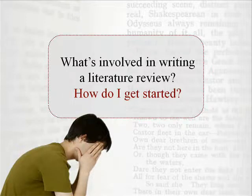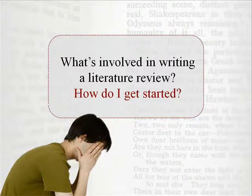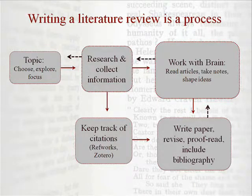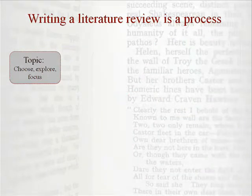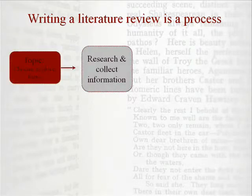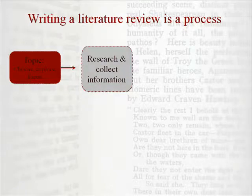At this point, you may be asking yourself: what's involved in writing a literature review, and how do I get started? Writing a literature review is a process with several key steps. Your first step involves choosing, exploring, and focusing your topic. At this stage, you might discover that you need to tweak your topic or the scope of your research as you learn more about the literature. Then you'll need to do some research using article databases, the library catalog, Google Scholar, and other sources to find scholarly information.